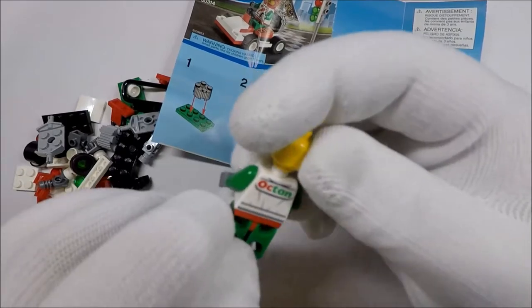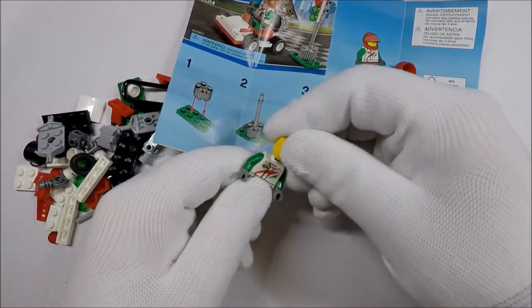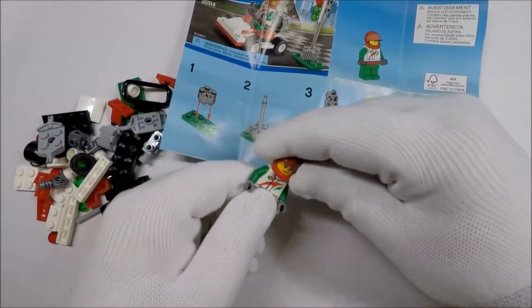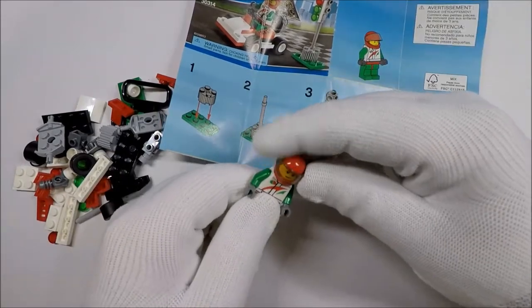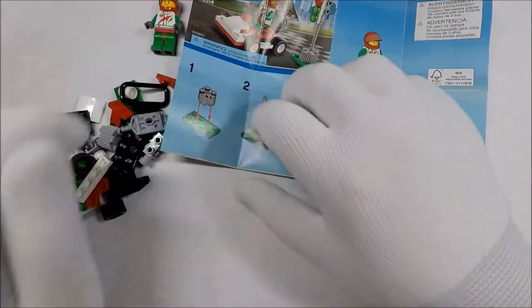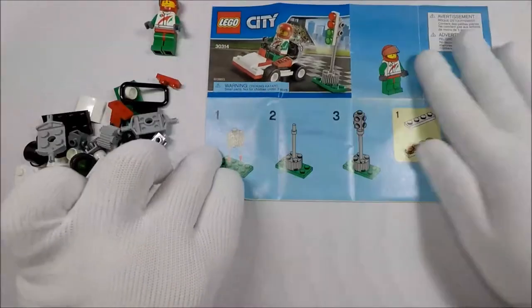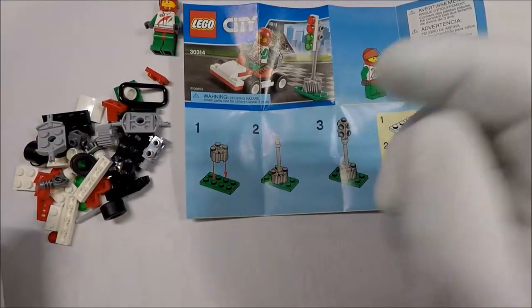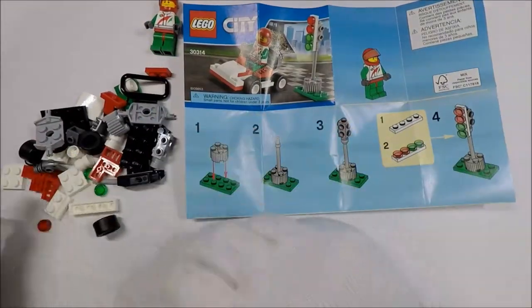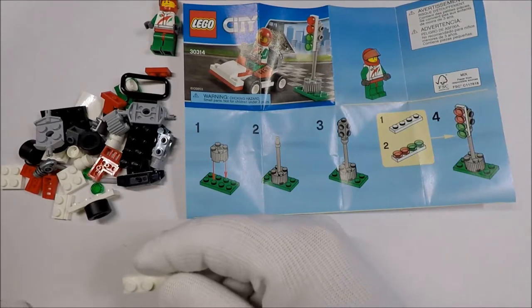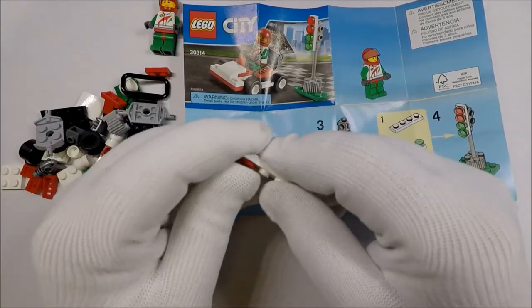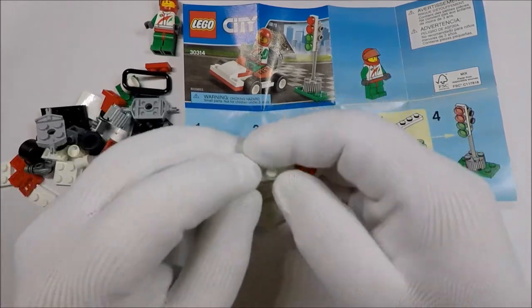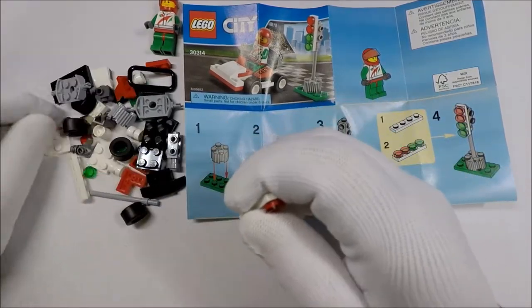Ah! He's an Octan Racer? Alright. So, here's our Go-Kart dude. And next, we build the light thing, I guess. Build the light thing. So, red and green and red and green.